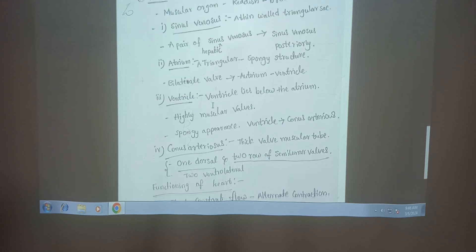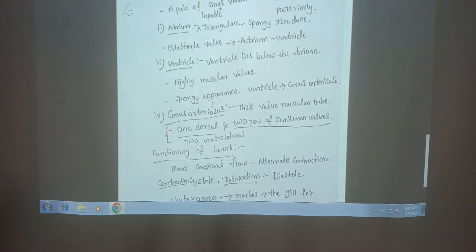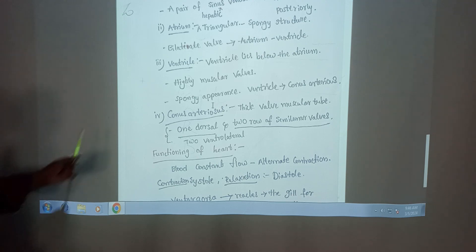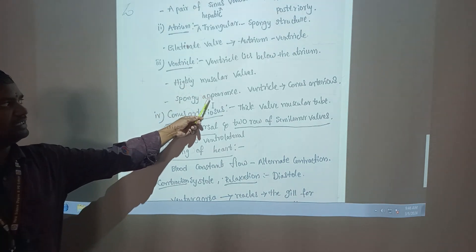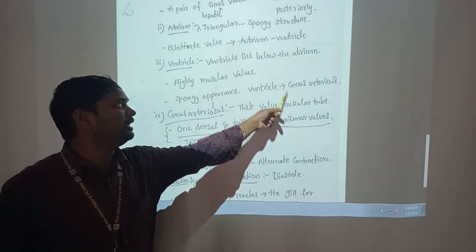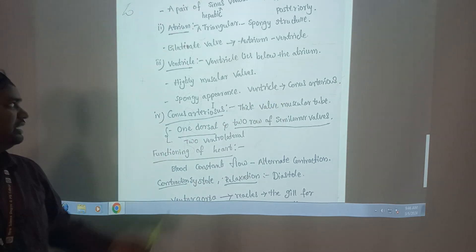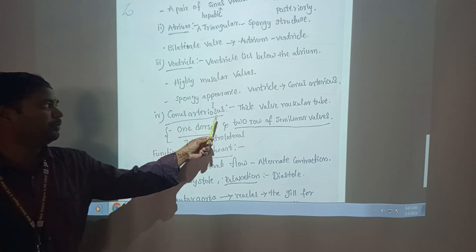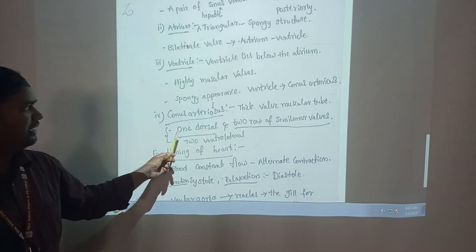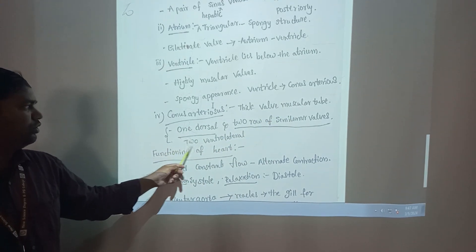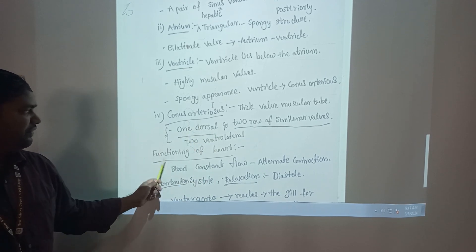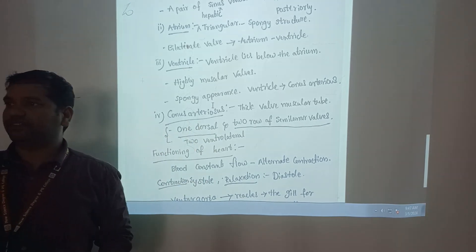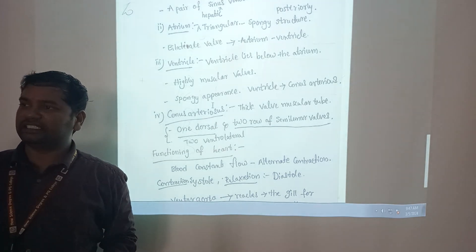The ventricle lies below the atrium. It is a prominent chamber with thick and highly muscular walls with a spongy appearance. Blood from the ventricle enters into the conus arteriosus. The conus arteriosus is a thick-walled muscular tube with one dorsal part connecting to the ventricular lateral part, and it carries blood to different body parts. The heart has four parts: sinus venosus, atrium, ventricle, and conus arteriosus.